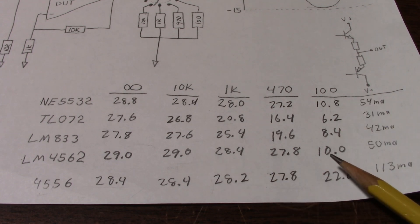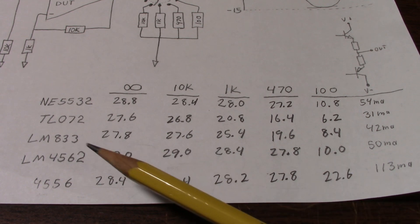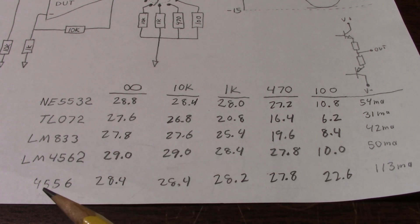Now you do see at 100 ohms it did drop, but that's just the current limit kicking in and protecting its output. And then there's the 4556, of course being a chip that delivers higher output current than the other ones, had very good numbers as well, especially with the 100 ohm load.